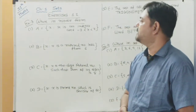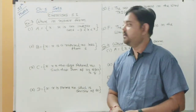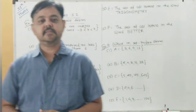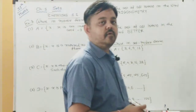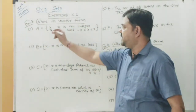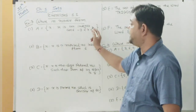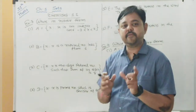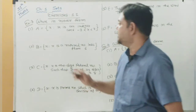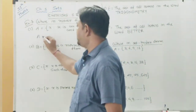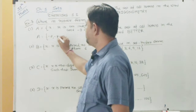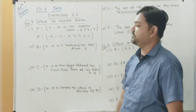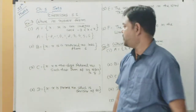Next, Example number three: write in roster form. The given set is in set builder form — convert it into roster form. Set A = {x : x is an integer and -3 < x < 7}. Between -3 and 7, the integers are: -2, -1, 0, 1, 2, 3, 4, 5, and 6. That is the listing method, roster form.